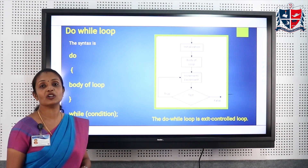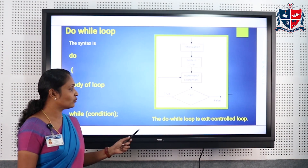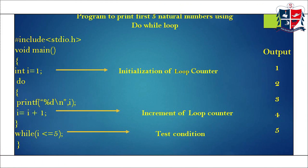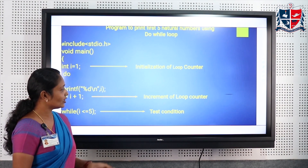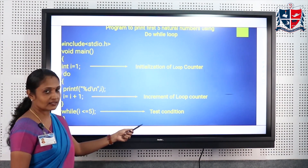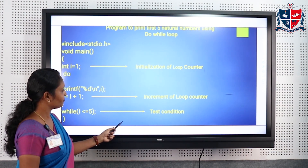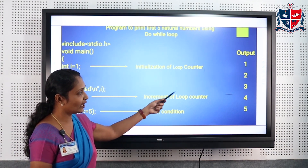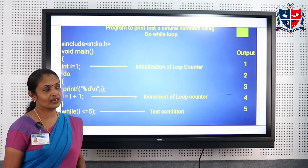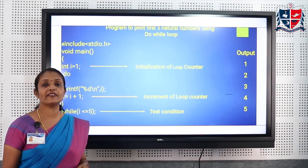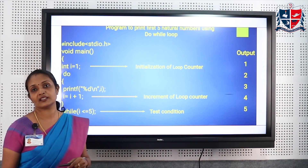Whatever the condition — true or false — the body of the loop will be executed at least once in the case of do-while. That's why do-while is known as an exit control loop. Taking the same example with i = 1 initialization, incrementing the loop and then testing the condition, after executing the loop we get the output 1 2 3 4 5. In the do-while loop, the condition is evaluated at the bottom of the loop.